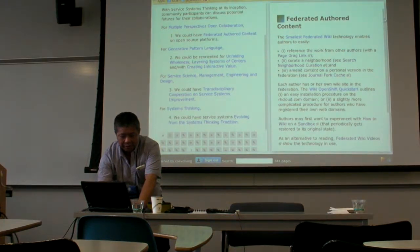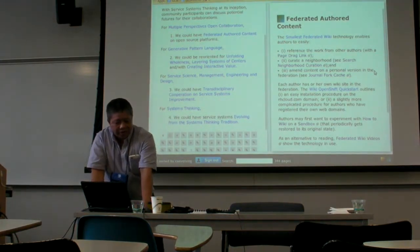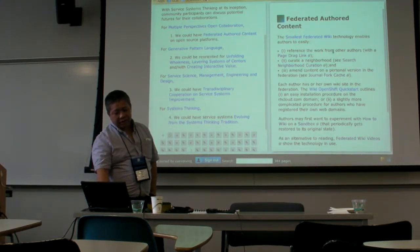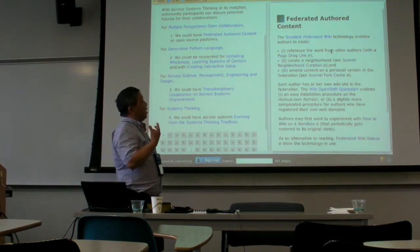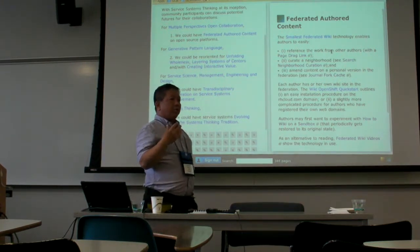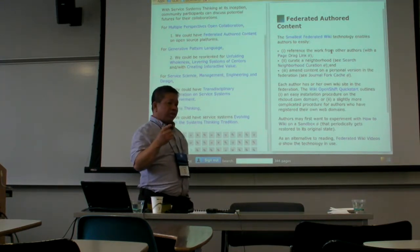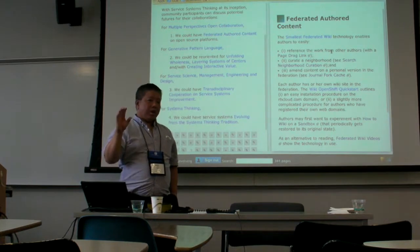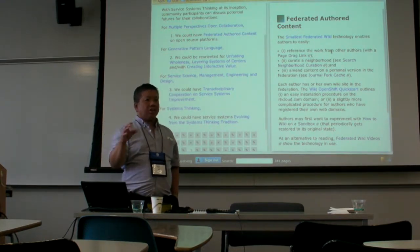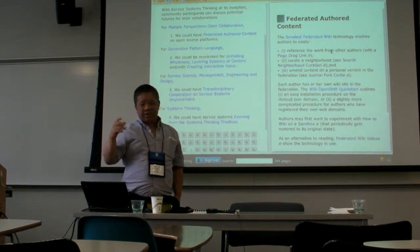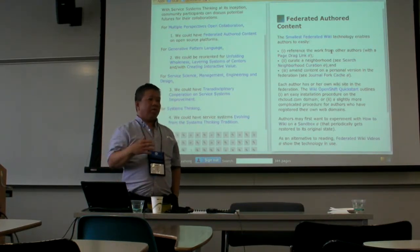Let's start on federated authored content. The technology you're seeing right now is the smallest federated wiki. What it allows you to do is that everyone has their own website — I would have mine, Peter would have his, Ken could have his. But the technology is such that you can actually drag and drop across the content. My content is on RH Cloud — a Red Hat cloud. Mine is on coevolving.com, and Peter would have his wiki on redesign.com as an example.